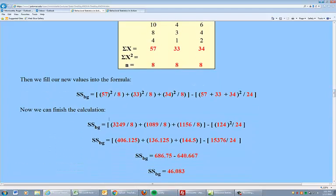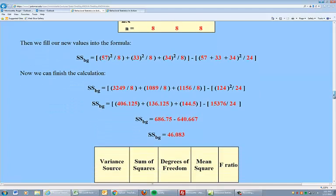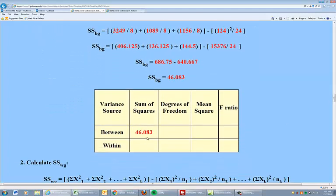We plug them into the formula, just like that, and we make sure we use the squares accordingly. We square here, and we sum these first, and then square there. Once you do that, you solve for SSBG, and you come up with 46.083, so we have one piece of the puzzle right there.